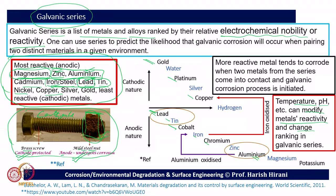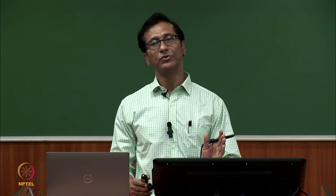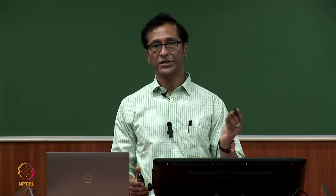The more reactive metal tends to corrode when two metals from a series come into contact and the galvanic corrosion process is initiated. Initially, the process will not show a very high corrosion rate, but as the process progresses, more cathode forms and less anode remains, causing the process to accelerate significantly. Initially all corrosion processes are slow, but they move non-linearly and may eventually lead to very fast failure.